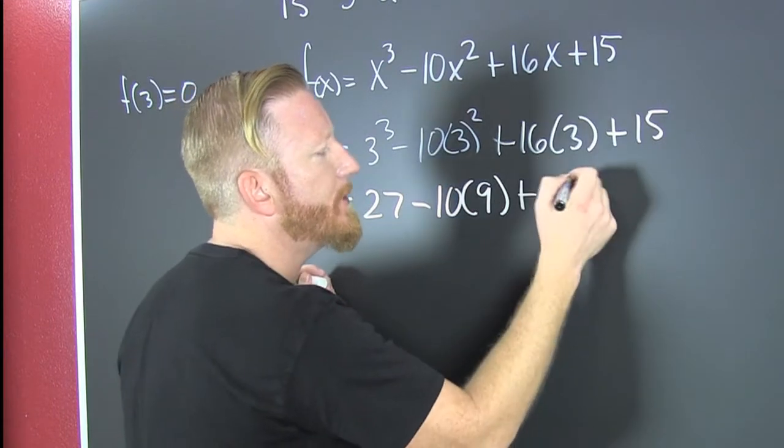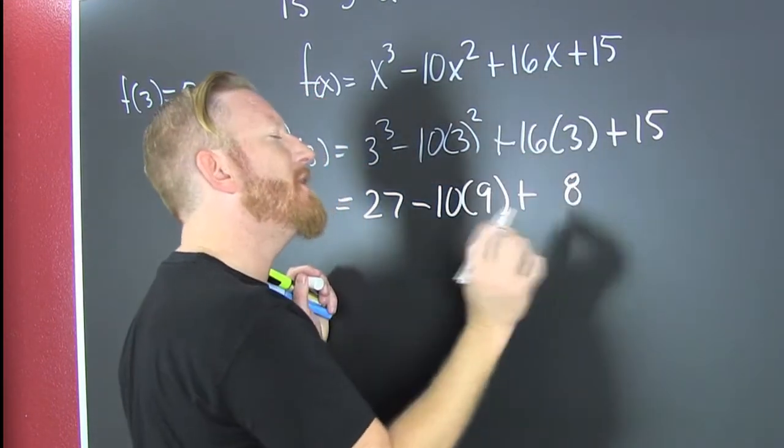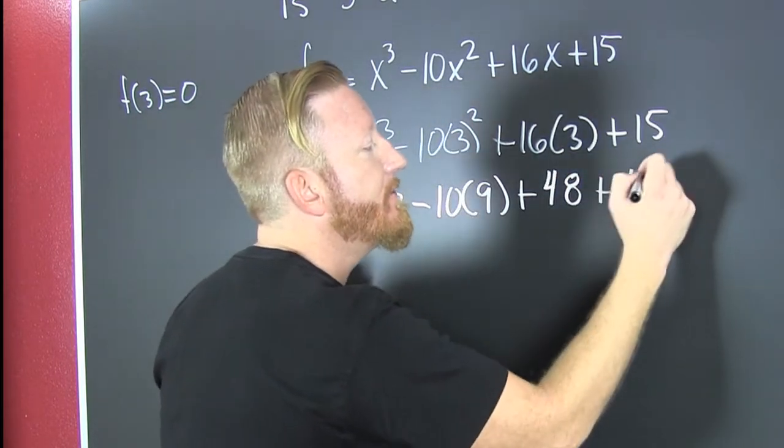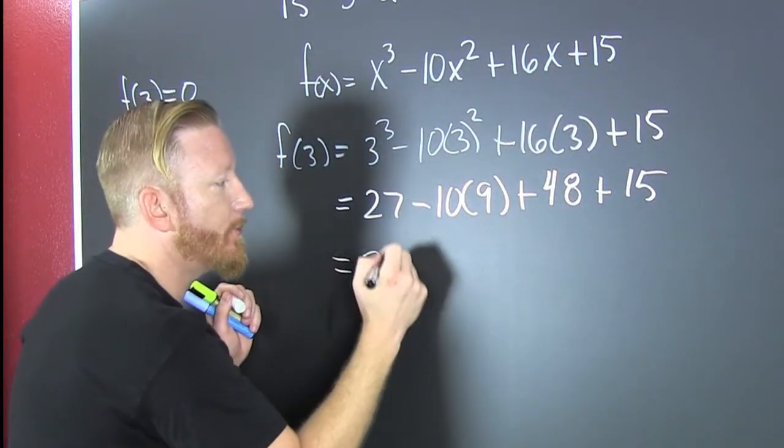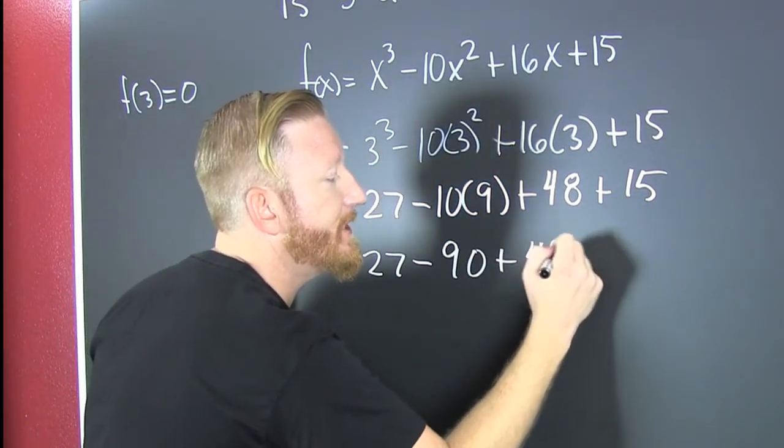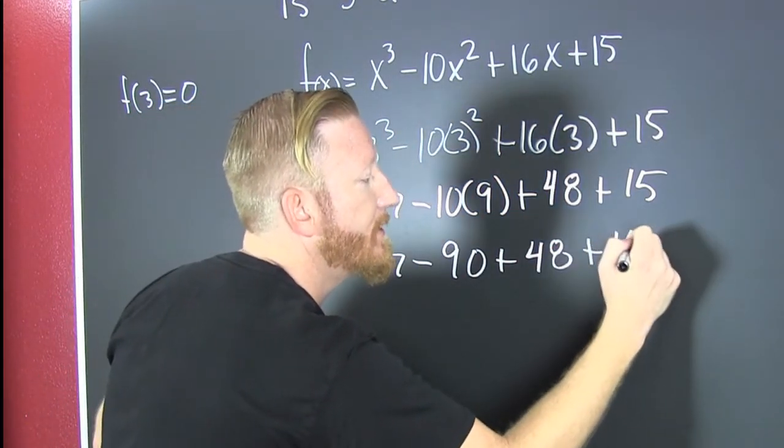Plus 16 times 3, I know it ends in 8. I carry a 1 and that's okay because they're not heavy. That's 48 plus 15. Oh, the numbers are getting big. This is 27 minus 90 plus 48 plus 15.